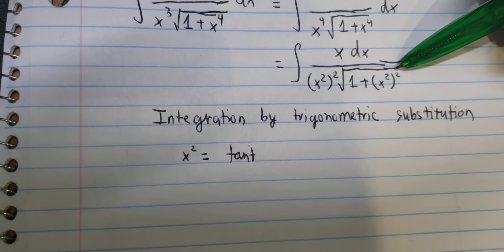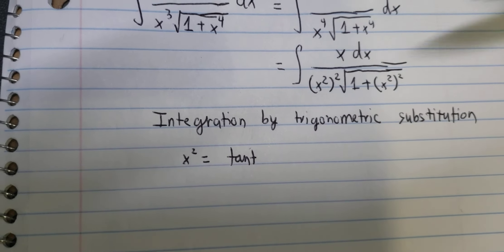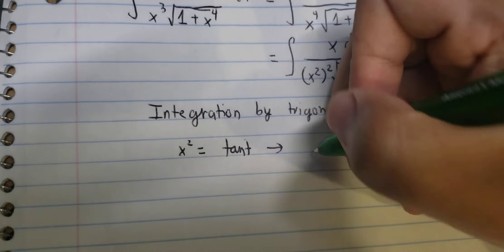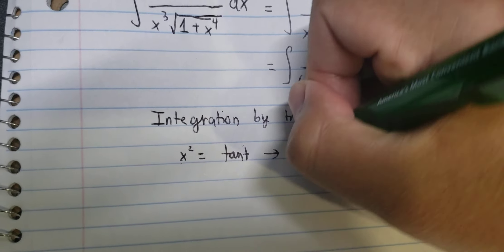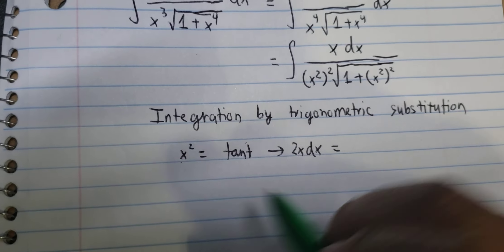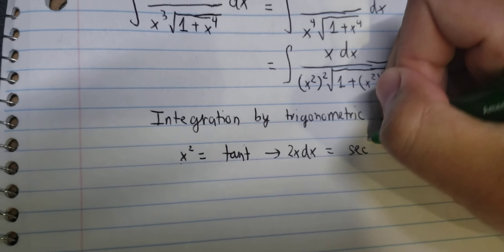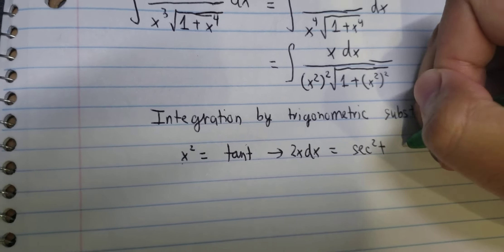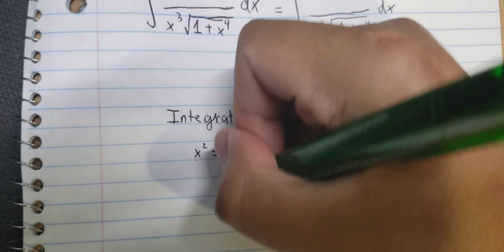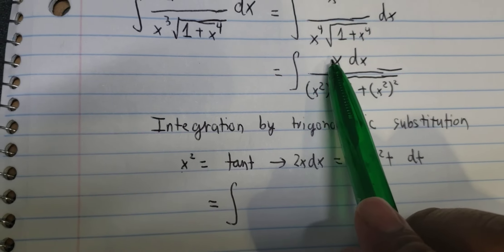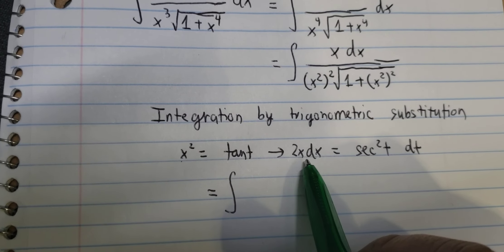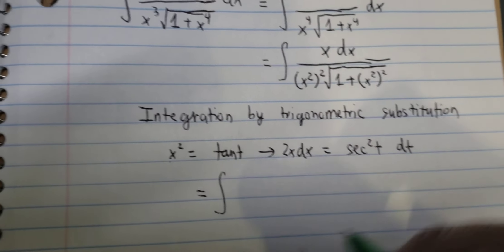And then we simplify the square root. Next we need to do the derivative for both sides. We have 2x on this side and secant of t squared dt on this side. Because we don't have number two, so we divide both sides by number two.